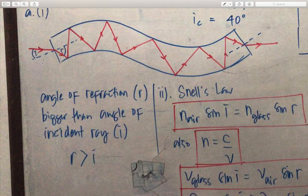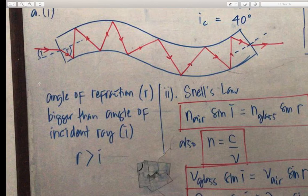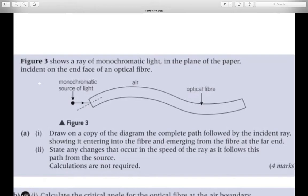I as incident ray angle and R as angle of refraction ray. Angle of refraction R is bigger than angle of incident ray I. Question 2i: State any changes that occur in speed of the ray as it follows the path from the source. Calculations are not required.